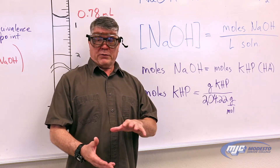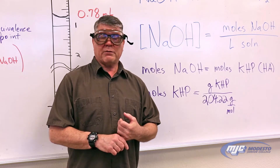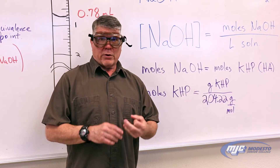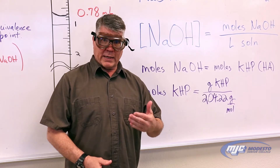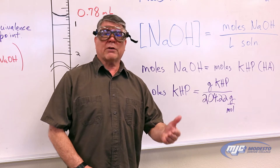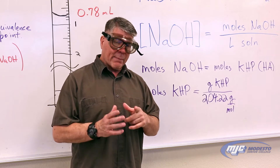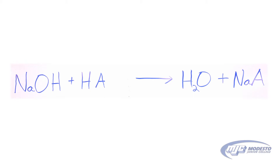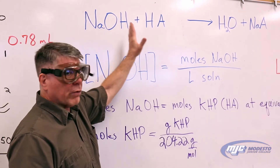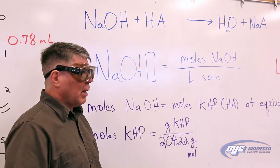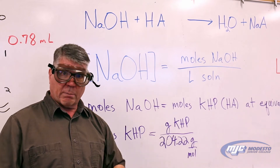The basic idea in this experiment is you're going to prepare a stock solution of sodium hydroxide, determine the concentration of sodium hydroxide in that solution, and then use that solution to determine the concentration of an unknown acid. The basic chemical equation that describes both parts of this experiment is this one right up here: sodium hydroxide plus some monoprotic acid, HA, where the mole ratio between the acid and sodium hydroxide is one to one. This applies to both the first part and the second part of the experiment.